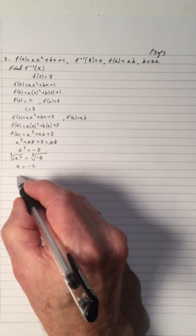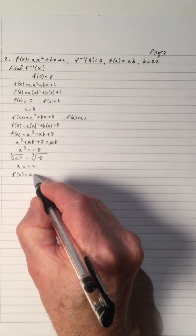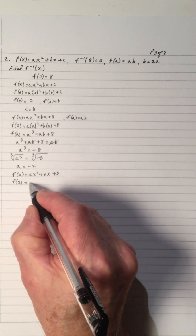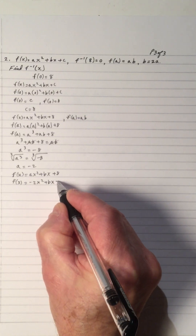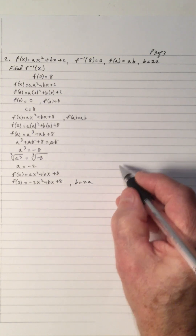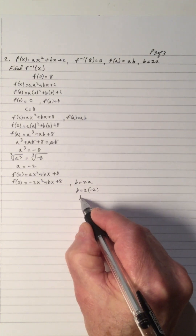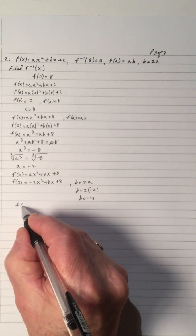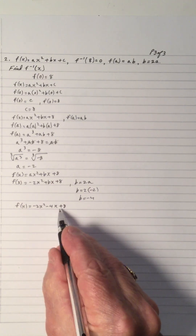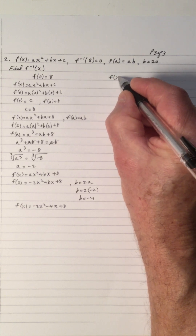The cube root of negative 8 is negative 2. So f of x equals ax squared plus bx plus 8, and now we've got a is negative 2. We also have that b is equal to 2a. So b equals 2 times negative 2, which means b is negative 4. So the f of x is equal to negative 2x squared minus 4x plus 8. Now we have the equation in standard form, so let's take it and put it into vertex form and work it through.